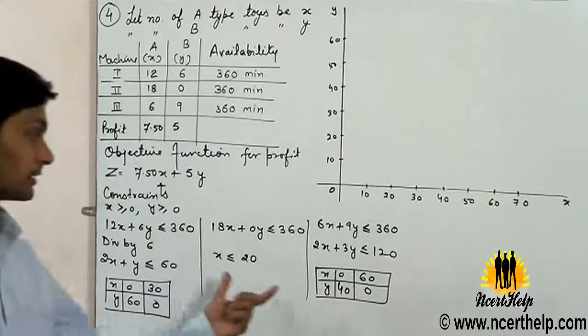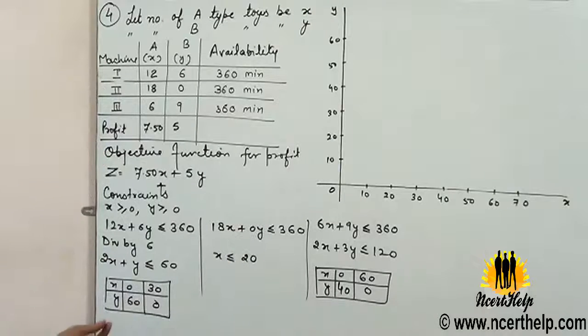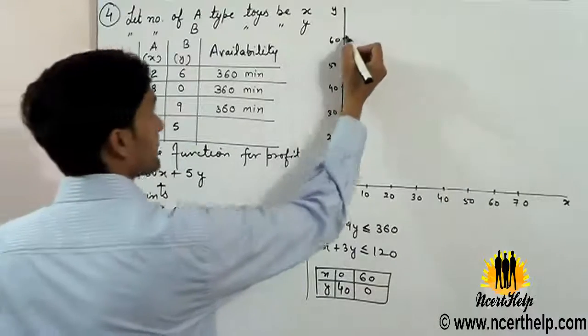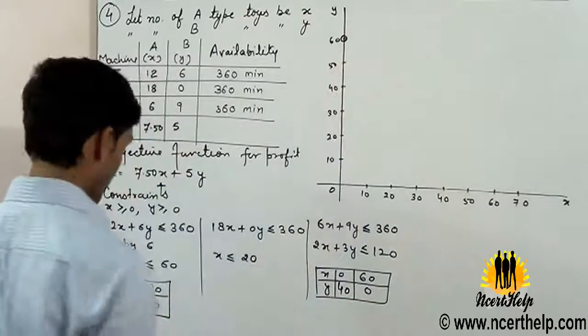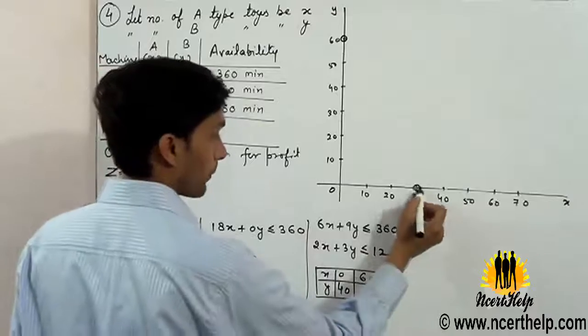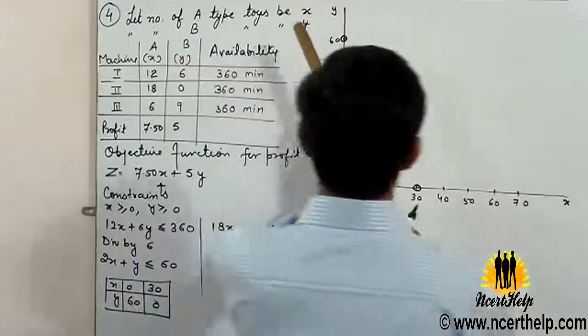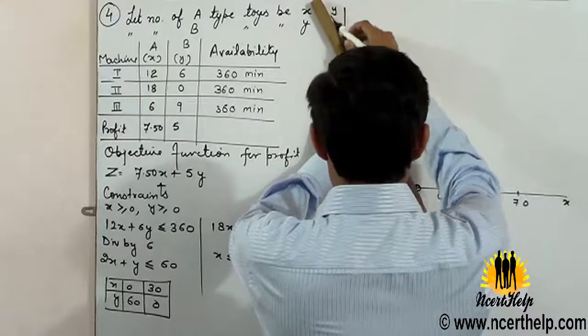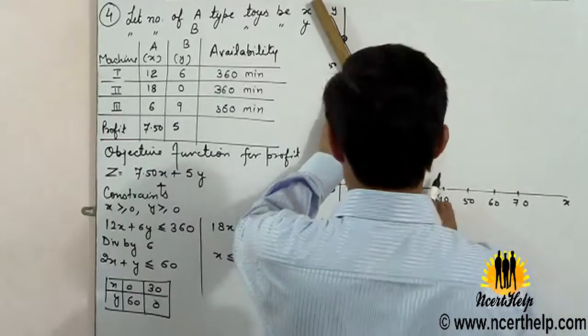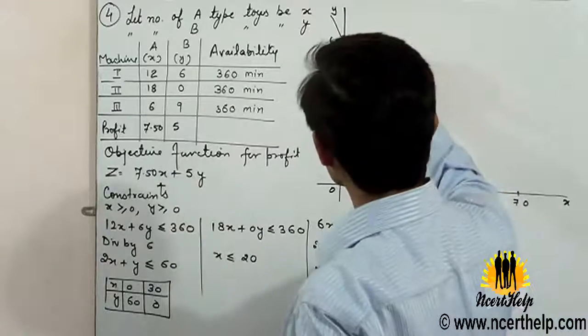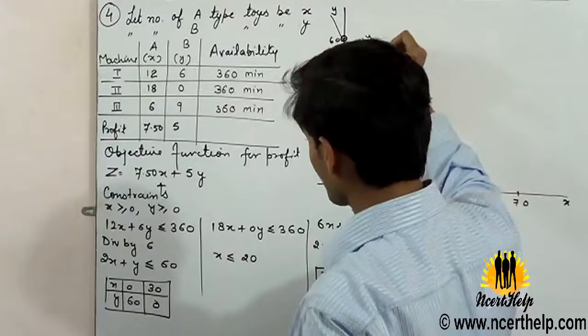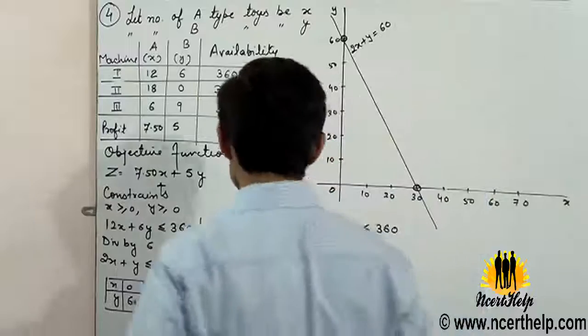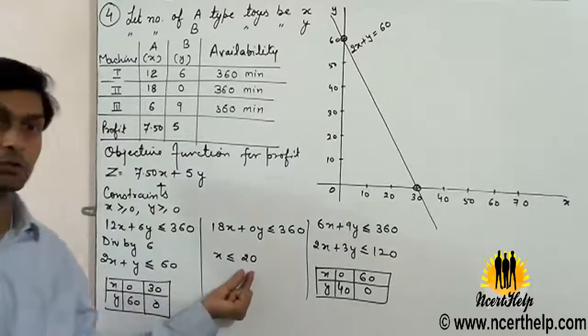Now we will draw these inequalities on the graph. First we have to plot (0,60). This point is (0,60), (30,0). Draw the line and write its equation: 2x + y = 60. The path x is less than or equal to 20.